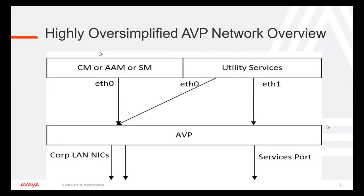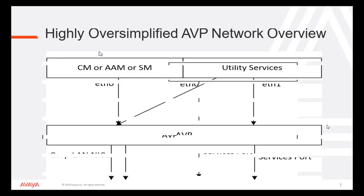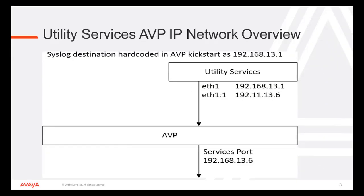This is a highly oversimplified AVP network overview. AVP is a physical platform on which we are deploying applications like Utility Services, Communication Manager, System Manager, Session Manager, etc. Corporate LAN NICs will be connected through AVP, and the Services Port will be connected through AVP where Utility Services will be acting as a Services Port functionality. The syslog destination is hard-coded in AVP Kickstart as 192.168.13.1, which is used by Utility Services, and AVP Services Port will use the default 192.168.13.6. All alarming information from AVP is sent to Utility Services through the syslog.